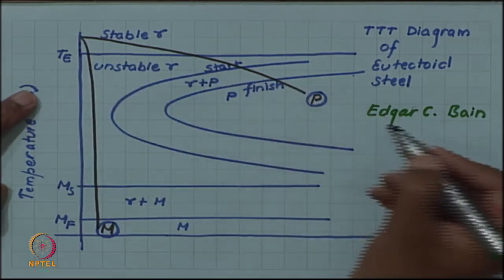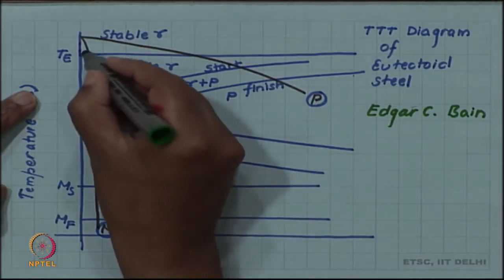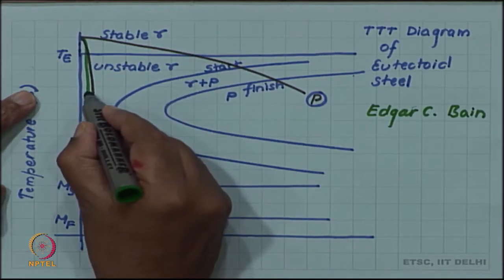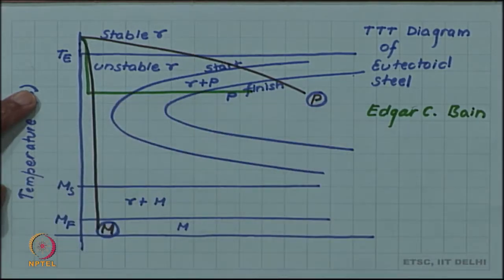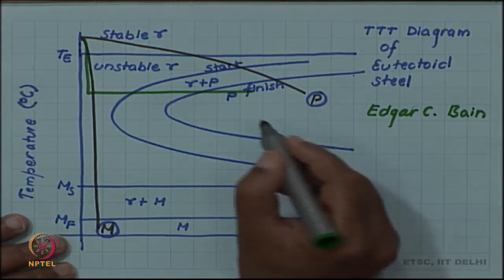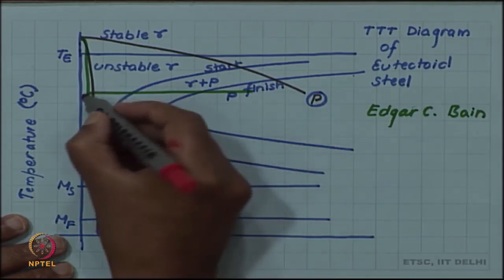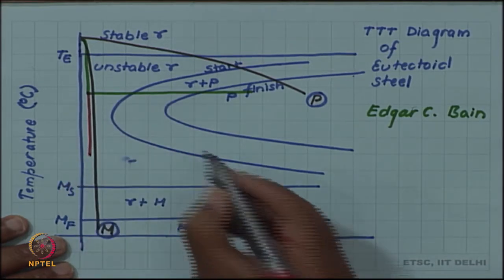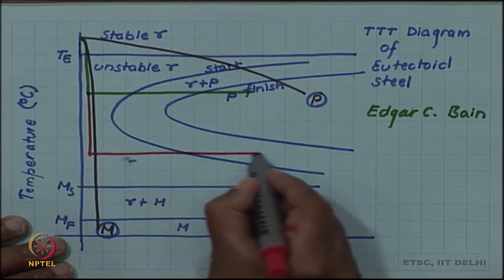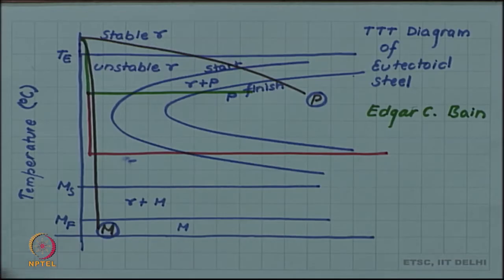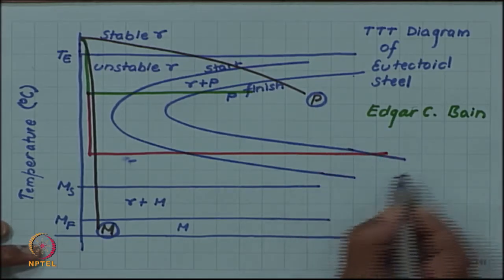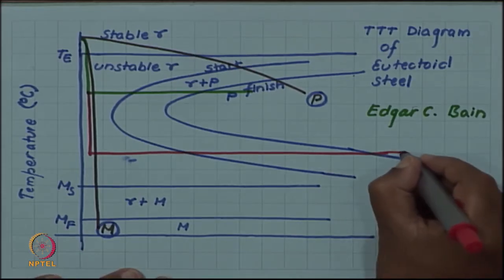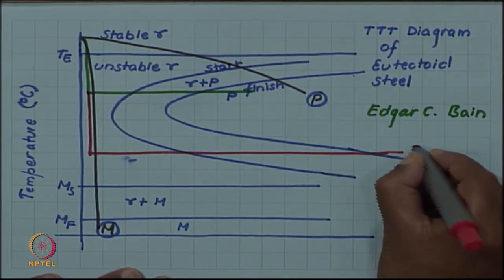In fact, he was not continuously cooling as shown in these lines, but he was initially quenching fast and then holding for transformation. We saw that it transforms to pearlite, but when he carried this experiment to much lower temperature — cooling to a low temperature and then holding it at that temperature for transformation to happen — he found that the transformed product did not resemble pearlite.